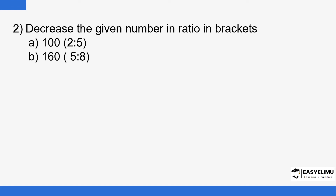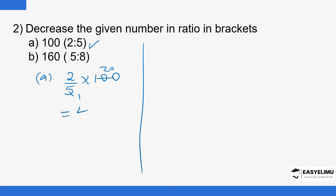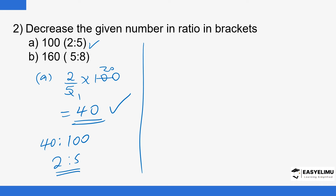Now we want to decrease the given numbers in the ratios shown. Starting with question (a): we have 2 over 5 multiplied by 100. 5 goes into 100 twenty times, and 20 multiplied by 2 is 40. So the answer is 40. If you want to verify the decreasing ratio, new value is 40 and original value is 100, giving 40 to 100. Both are divisible by 20, which gives you 2 to 5.